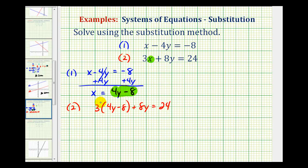So the first step here is to distribute. So we'll have twelve y minus twenty-four plus eight y equals twenty-four.